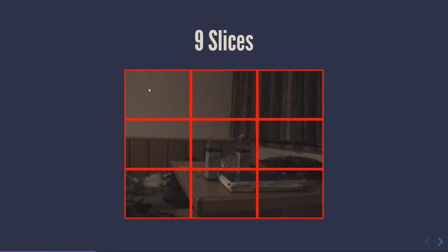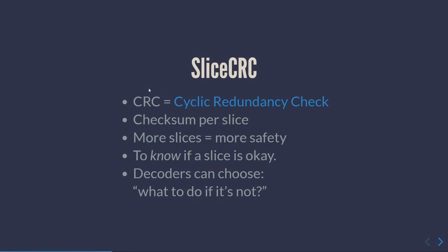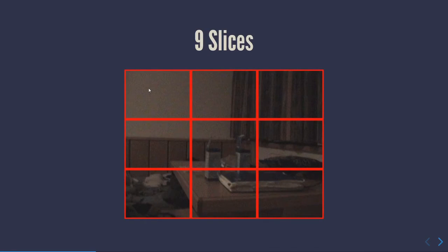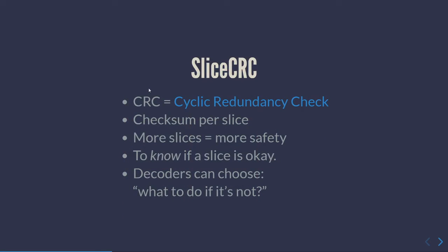Why would you want more slices if it gets bigger? Because there's another feature called slice CRC — hash codes or checksums, same principle but different. It's an error detection code per slice. Having more slices means each slice has a CRC code in the header, so the decoder can tell: this slice decodes nicely, or this slice has a bitstream error. More slices means more robust files.